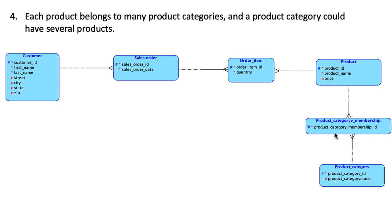So I create an associative entity type to handle the many-to-many relationship, calling it Product Category Membership. Sometimes when you can't find a good name for the associative entity, a common practice is to join the two entity names — so Product Product Category could work. Here Product Category Membership makes sense because it captures which product category a particular product belongs to. Following our earlier recommendation, this associative entity has its own primary key rather than relying on key migration.